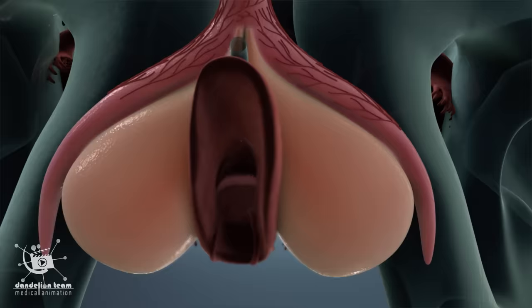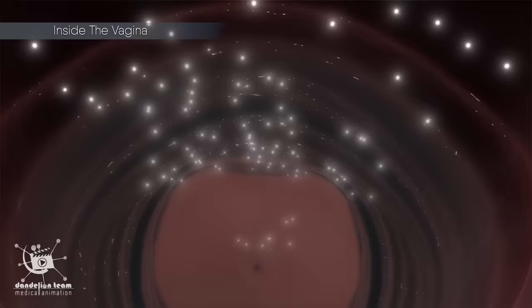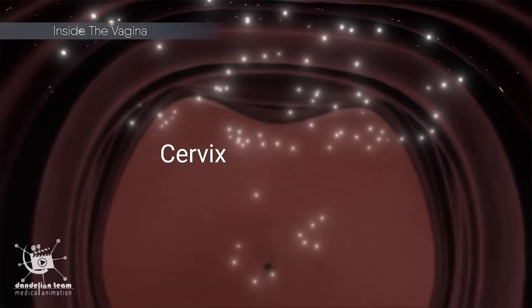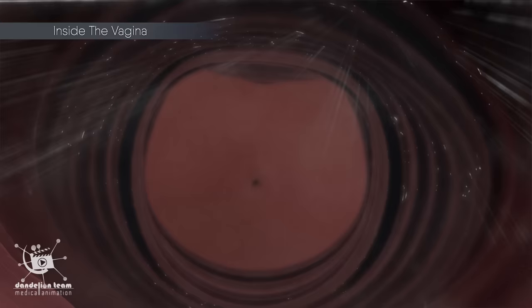Some women can achieve different kinds of orgasms from stimulation of select regions inside the vagina, such as the so-called G-spot and cervix, or a blend of the two.